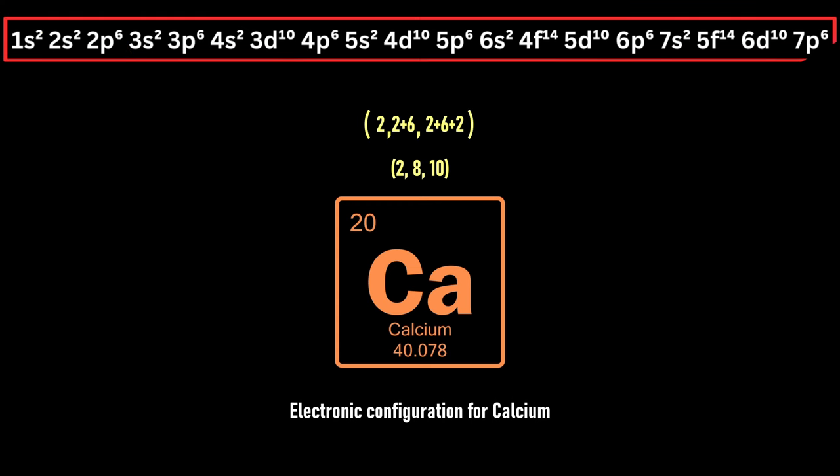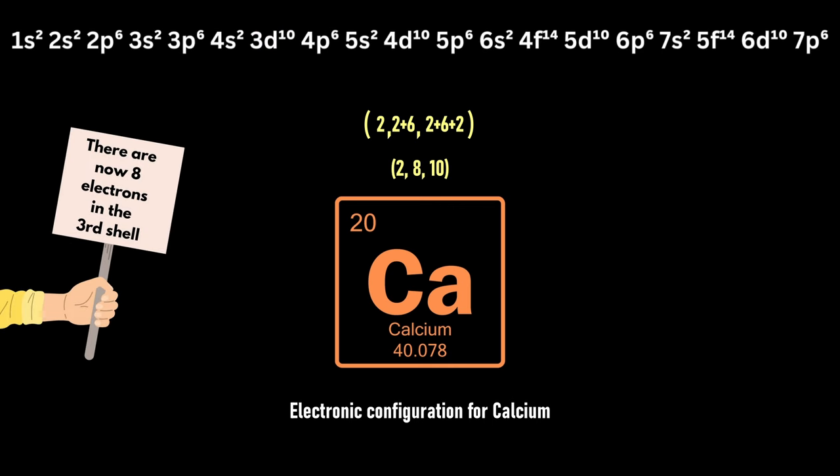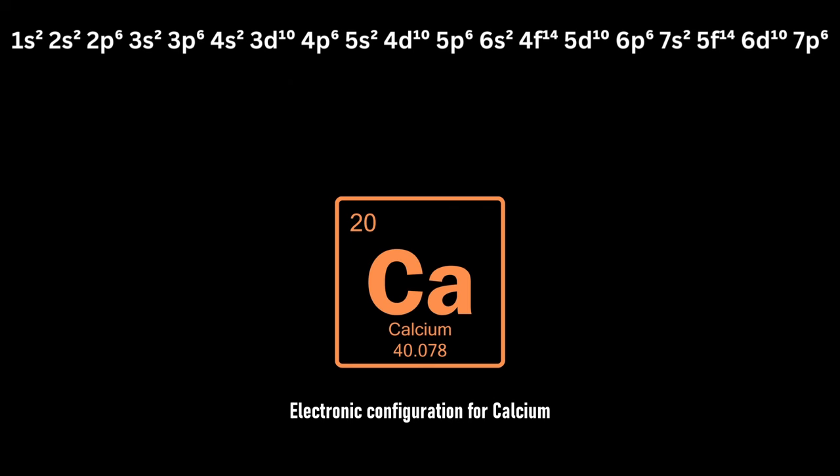However, due to the key rule mentioned above, 4S must be filled before 3D, meaning that there are now 8 electrons in the third shell and 2 in the fourth, making the final configuration 2, 8, 8, 2.